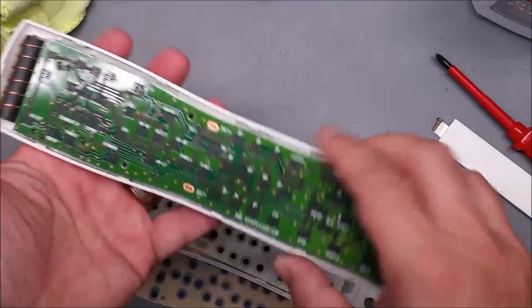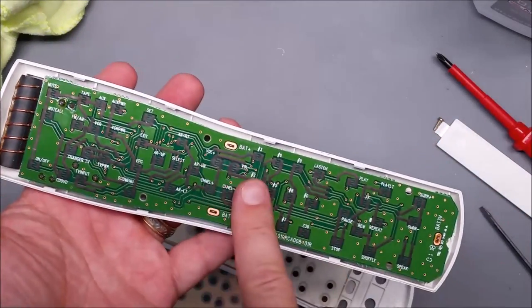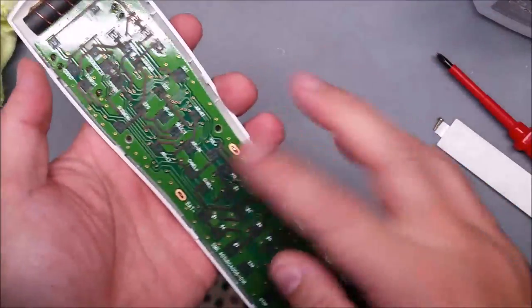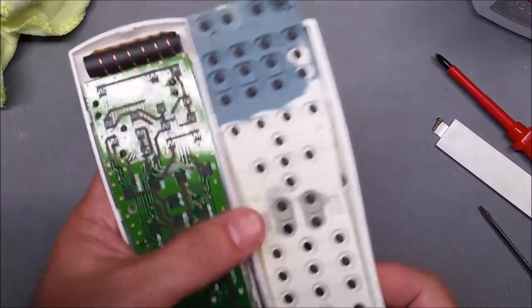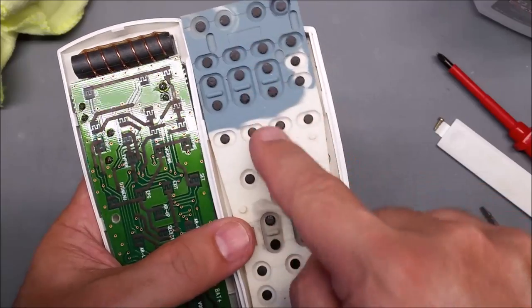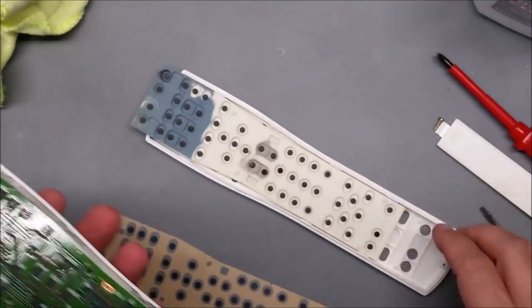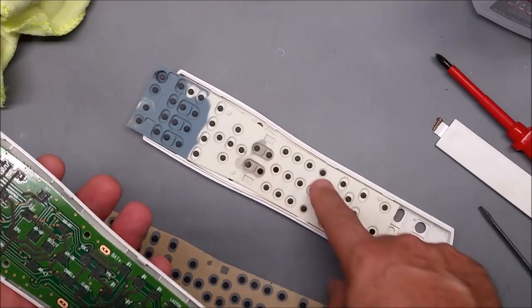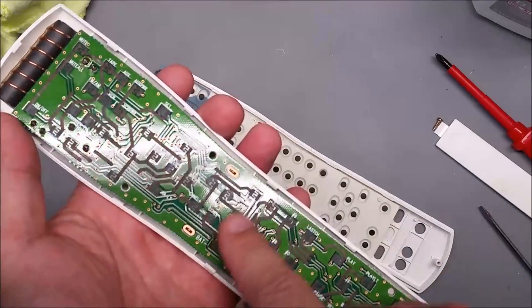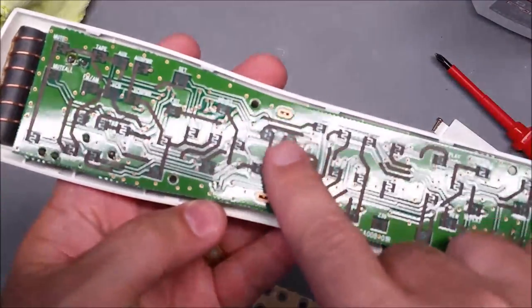The circuit board has to be cleaned. This one has had every single one of these buttons painted with conductive paint. So somebody's repaired this in the past. Conductive paint does not last. It flakes off and builds up on the circuit board, and I'll give you a close-up of these buttons.